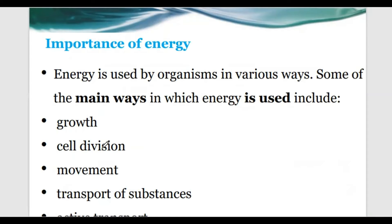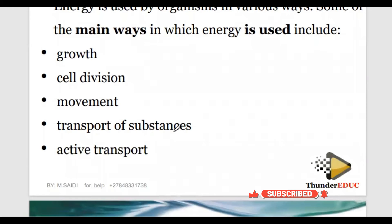You cannot even grow if there is no cell division. The cell must divide, after that you have cell elongation, after that growth can take place. If the cell divides and there is no elongation, it means it is going to become a cancerous cell - you're going to suffer from cancer because they're just dividing with no increment in size. Movement - sometimes when you are weak you say you don't have energy and can't walk for a long distance because you are hungry, meaning you don't have energy.